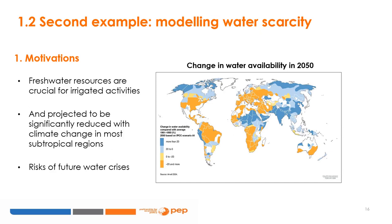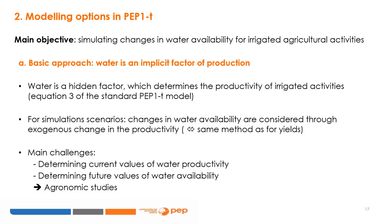The second long-run climate change impact we focus on is water availability. Freshwater resources are crucial for irrigated agricultural activities. However, precipitation and potential evaporation are the main climatic drivers controlling these resources, which are projected to reduce significantly in most subtropical regions with climate change. These reductions of water availability might intensify competition for water among irrigated agricultural sectors and among agriculture and other economic sectors, therefore increasing the risk of a water crisis. The main objective here is to simulate changes in water availability for irrigated agricultural activities over a given long-run period. Two options can be considered.